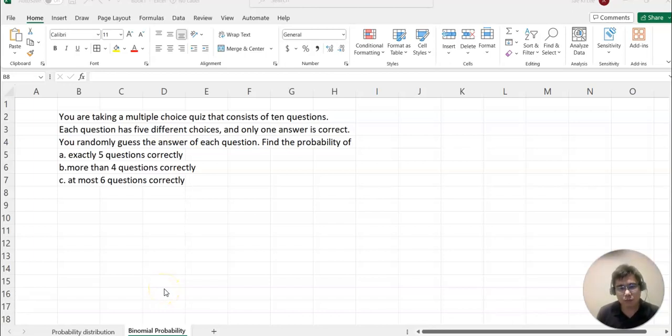Hello everyone, welcome to happymed.com. This time we are talking about binomial probability. You are taking a multiple choice quiz that consists of ten questions. Each question has five different choices and only one answer is correct. You randomly guess the answer of each question. Find the probability of: a) exactly five questions correctly, b) more than four questions correctly, c) at most six questions correctly.